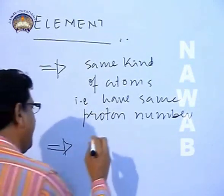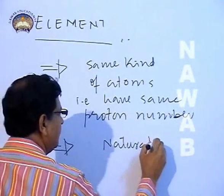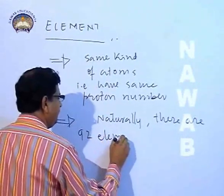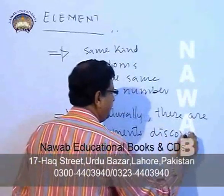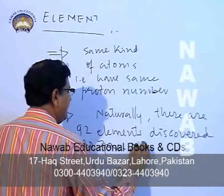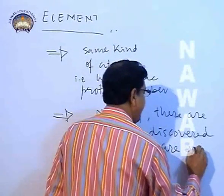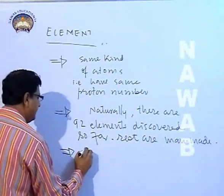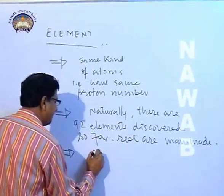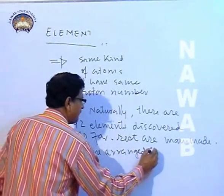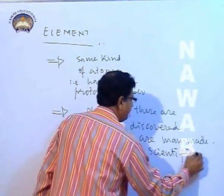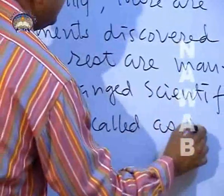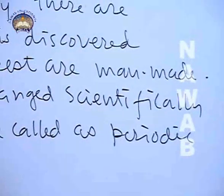Number two thing about elements: naturally, there are 92 elements discovered so far. The rest are artificially made or manmade. These naturally occurring and manmade elements are arranged scientifically in a table called the periodic table.